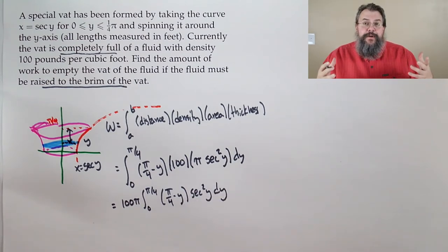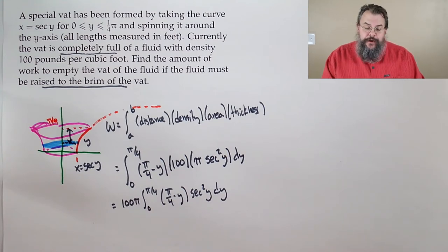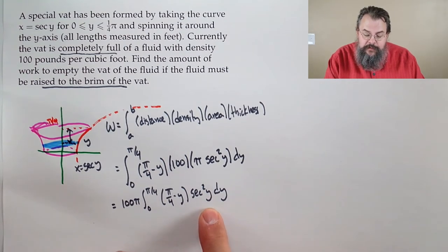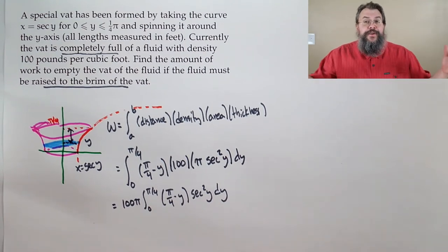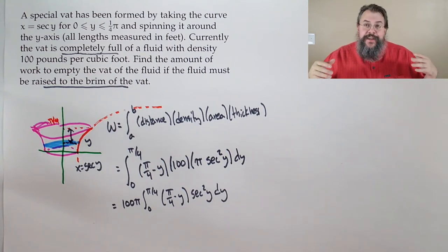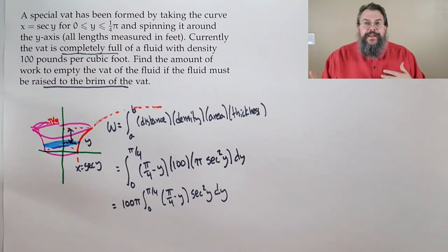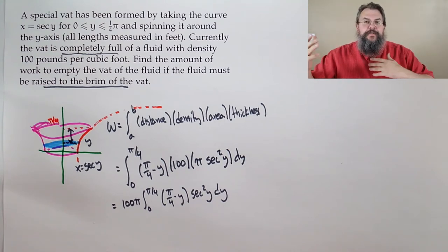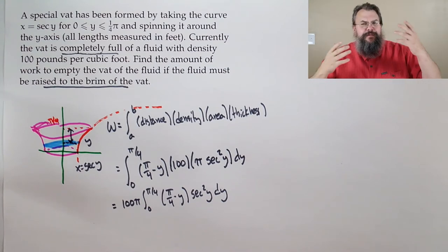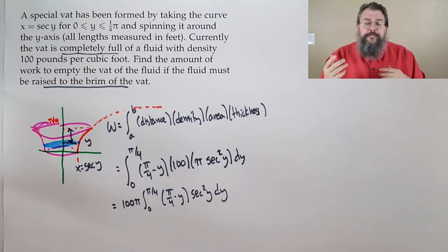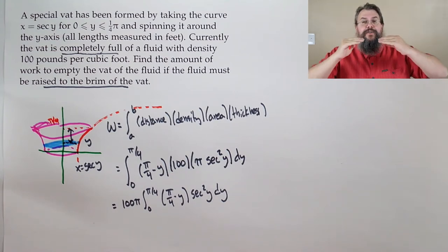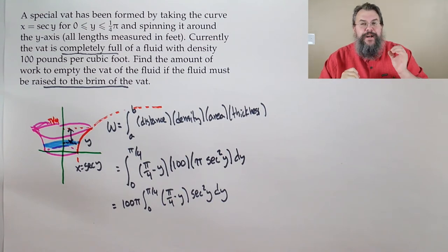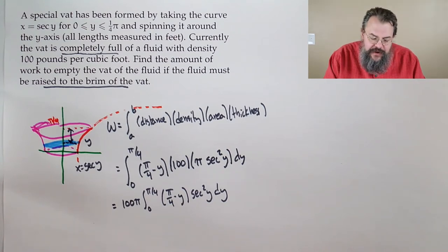Now we integrate. We have two things multiplying: (π/4 − y) and sec²(y). It's a good candidate for integration by parts — they're not really compatible for substitution or a trig identity. We have something polynomial, and when we differentiate it we get to a constant. So let's make (π/4 − y) the part we differentiate, and sec²(y)·dy the part we integrate.